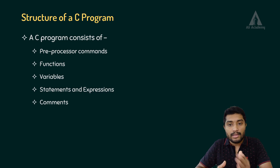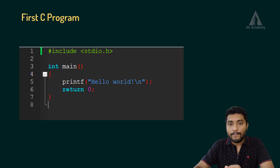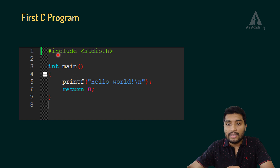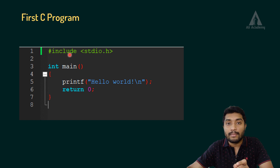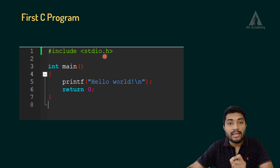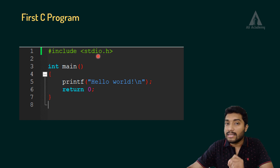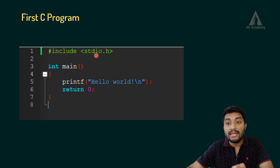So, consider this example — here you can see we have the hash include. This is a pre-processor command. Hash include — this is a pre-processor command. stdio.h is a header file. As the name indicates, it includes the stdio.h header file.